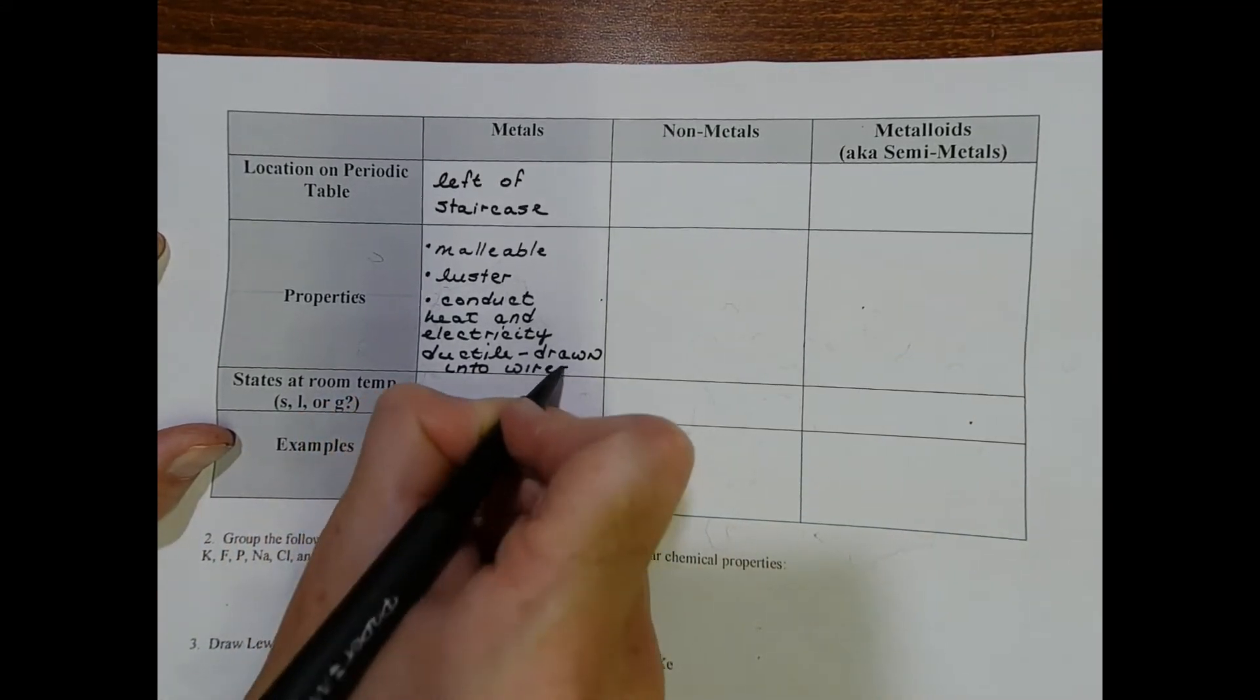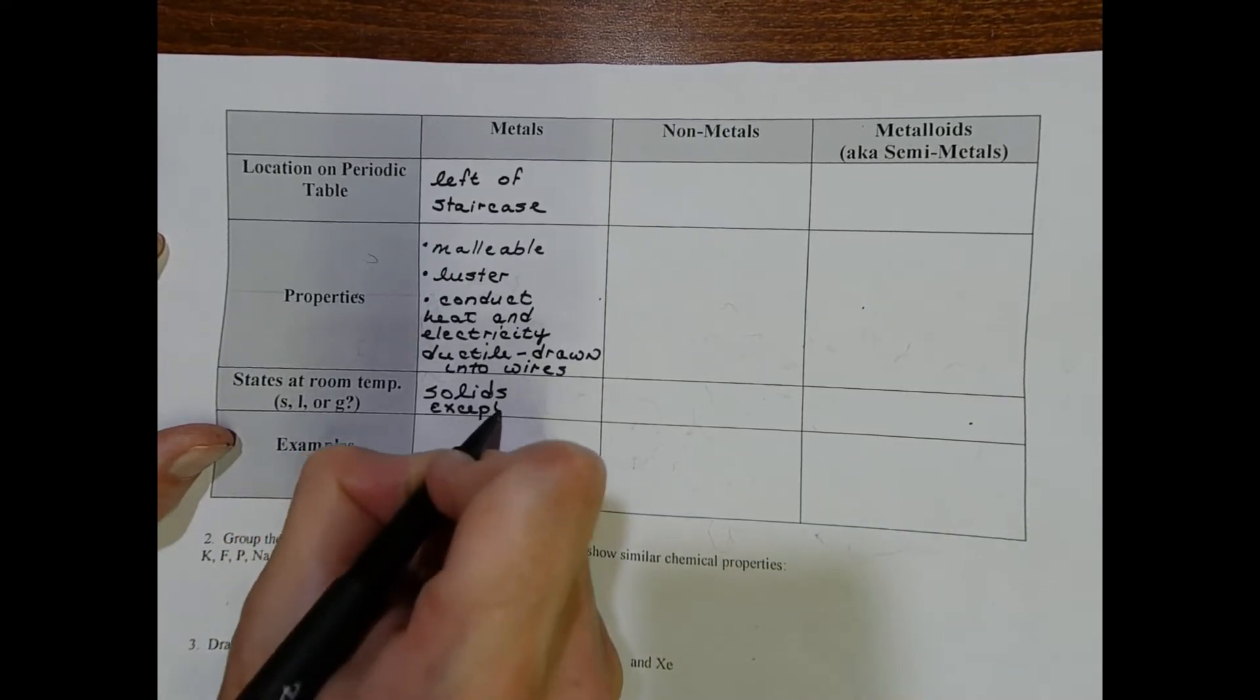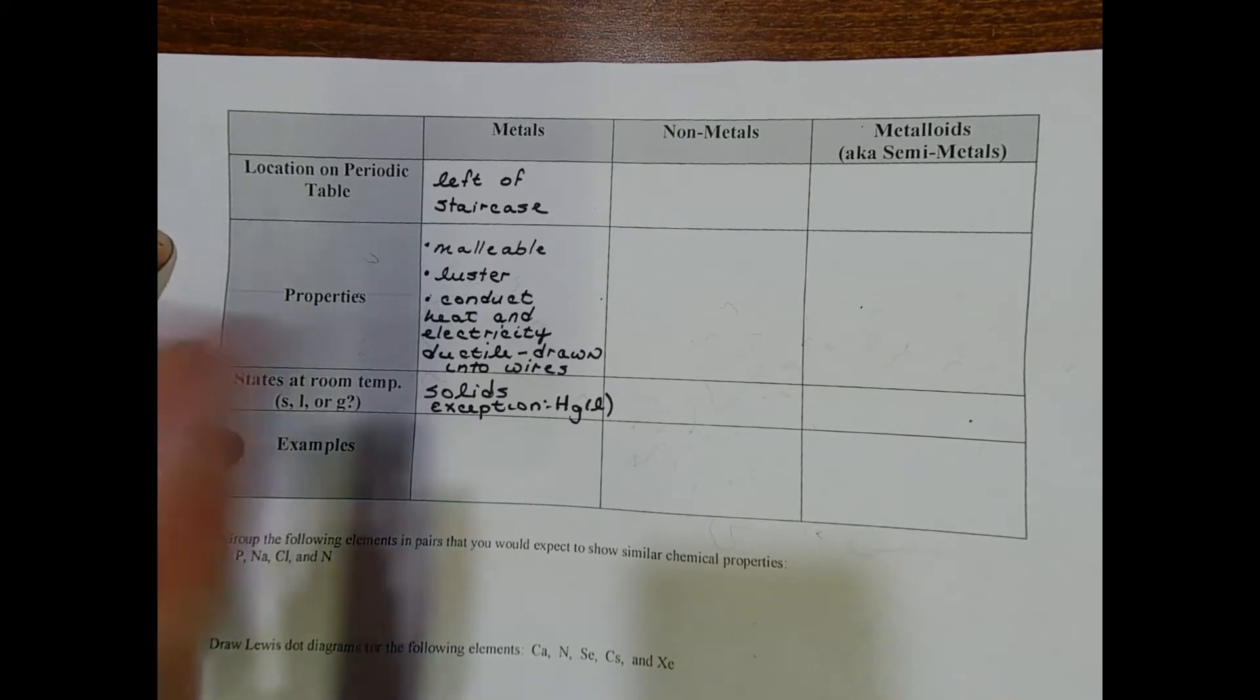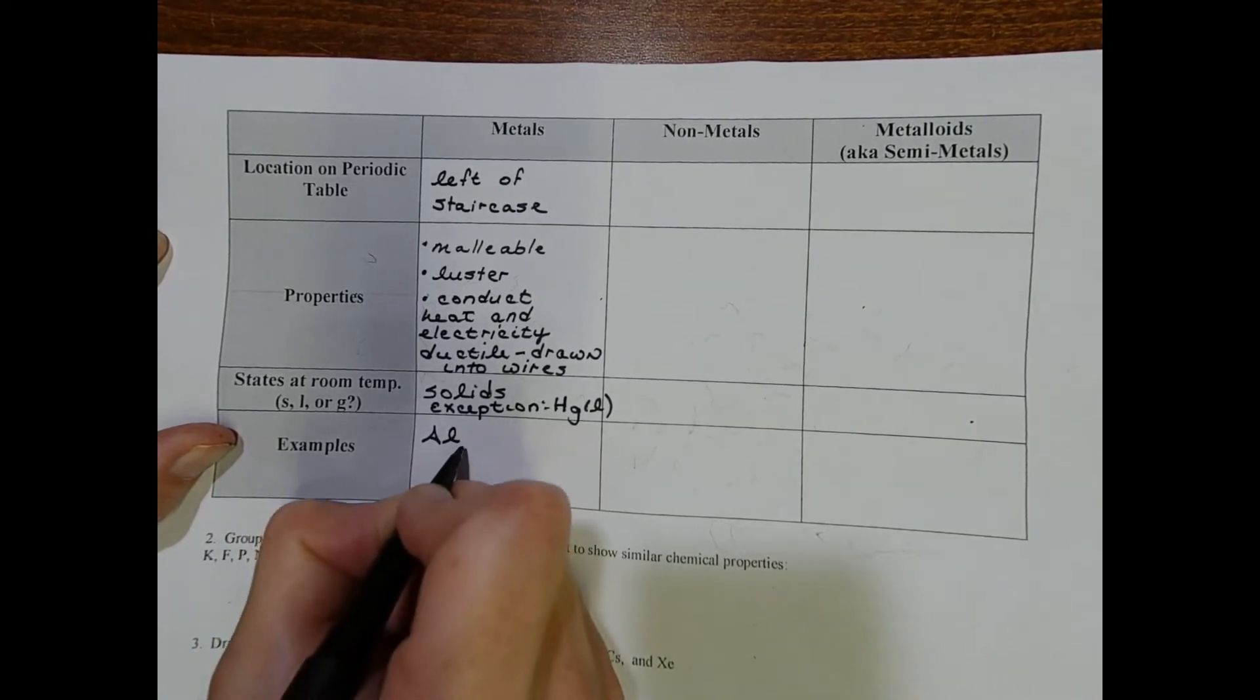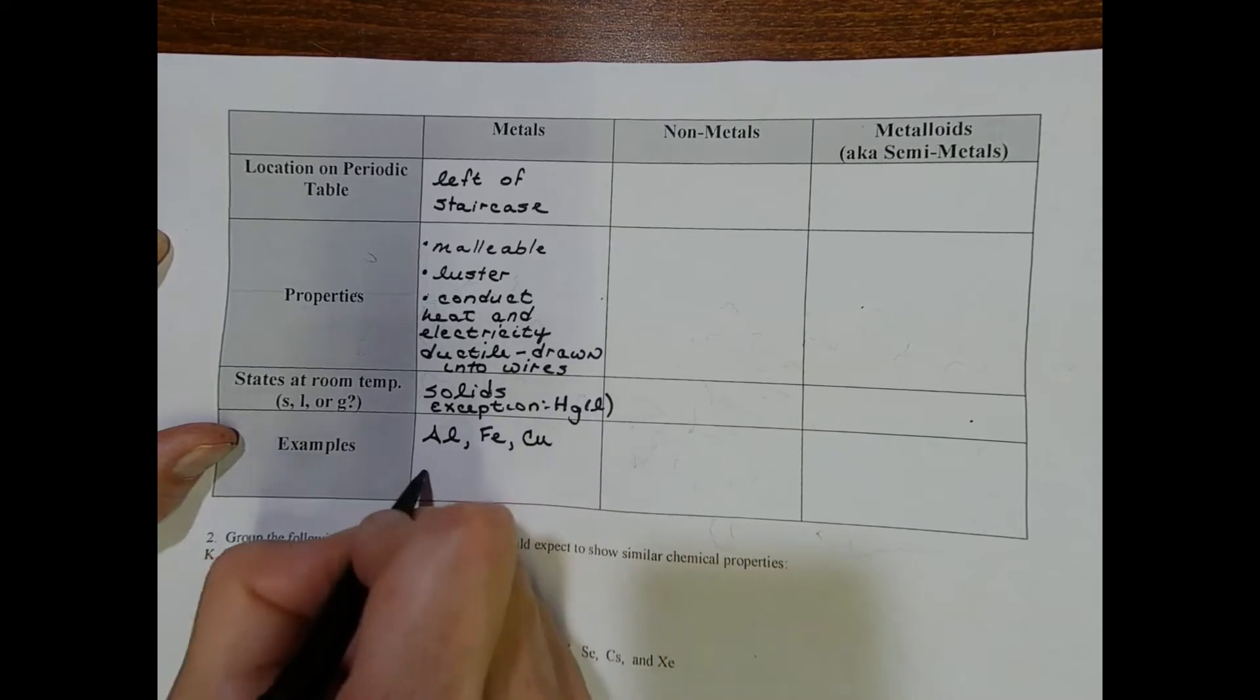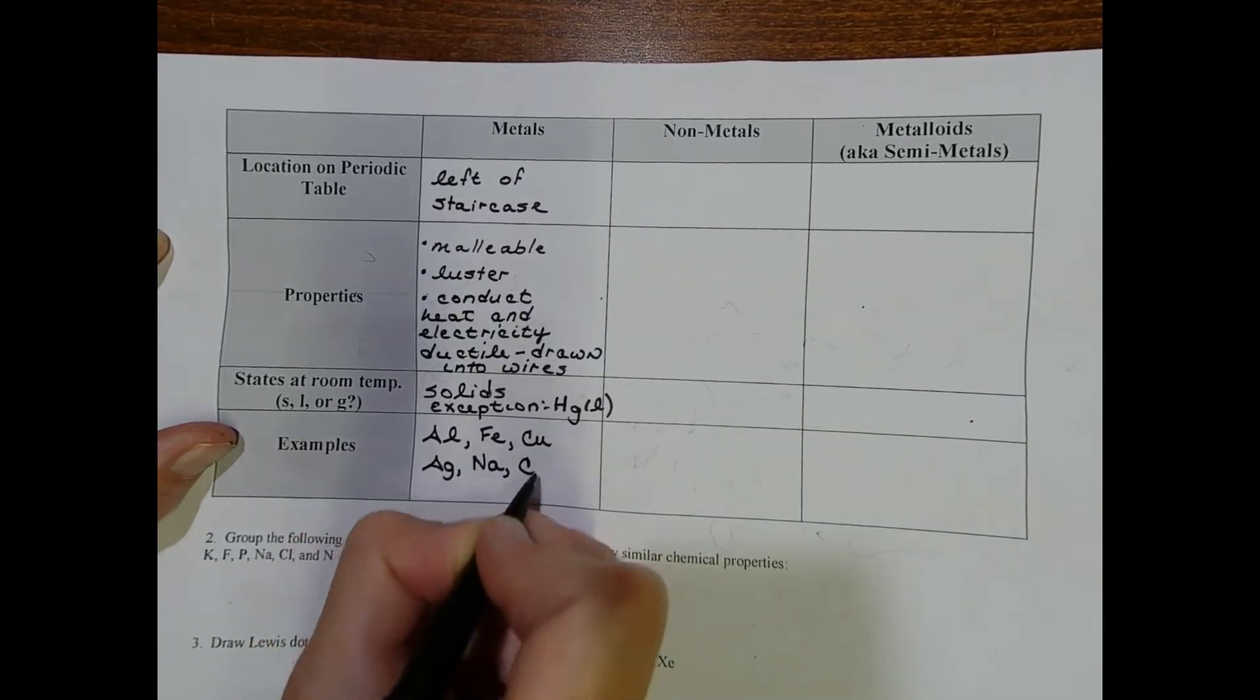Most metals are solids at room temperature. The big exception is mercury—mercury is a liquid at room temperature. You can choose any examples from the left of the staircase. I'm going to write down the ones we just discussed: aluminum, the steel wool which is iron (Fe is the elemental symbol for iron), copper, silver. We have other ones that we don't necessarily think of as metals but they are, like sodium or calcium. Those are all metals.